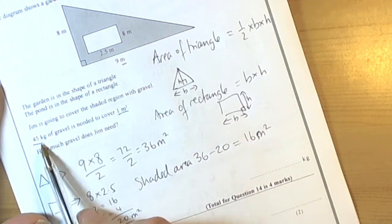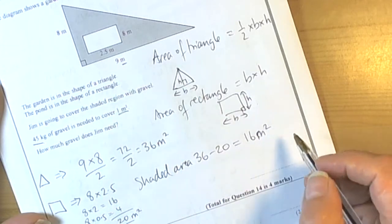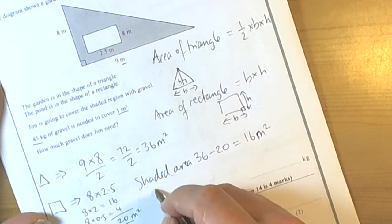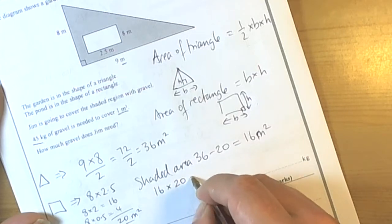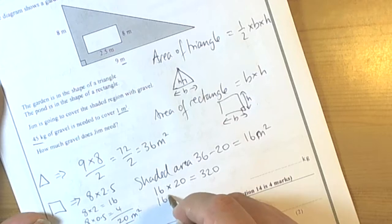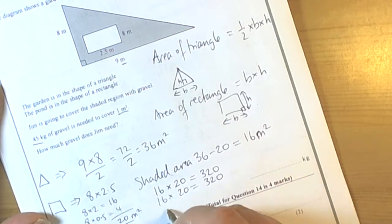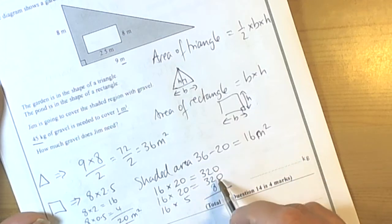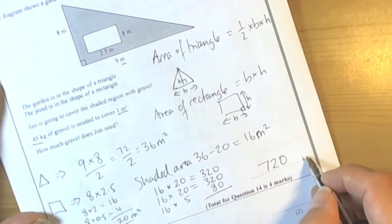Now it's saying that we need 45 kilograms for each square meter. So we're going to have to do 16 times 45. I'm probably going to do 16 times 20 is 320. Another 16 times 20 is 320. And then we need another 5 of those. So that will give us the 45 sixteens. So 16 times 5. 5 tens is 50. 5 sixes is 30. So that's going to be 80. And when we add those together, so we've got 20 plus 80 is 100, plus 300 is 400, so 720. So the answer is going to be 720 kilograms.